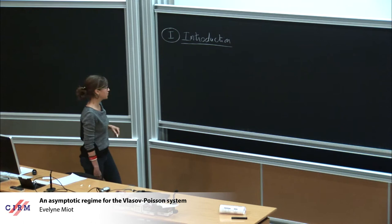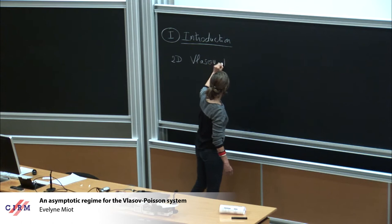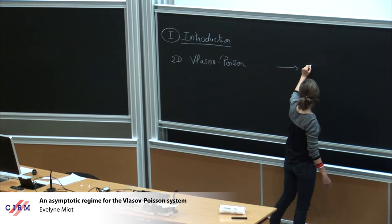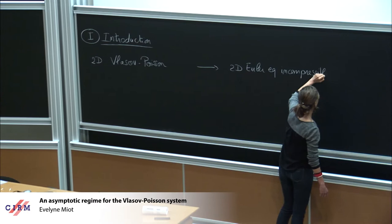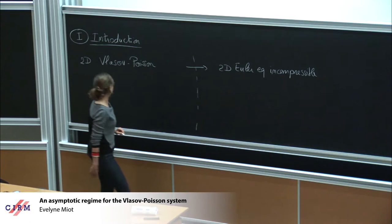The goal of this talk is to pass from the 2D Vlasov-Poisson system to the 2D incompressible Euler equation in a certain regime.